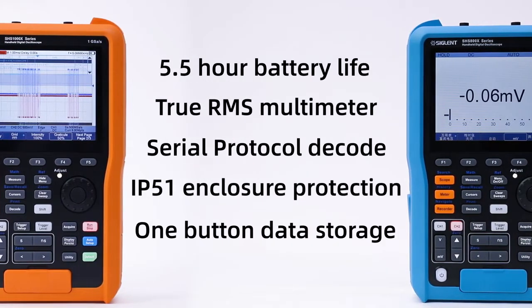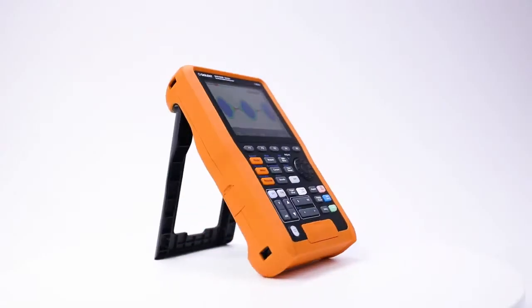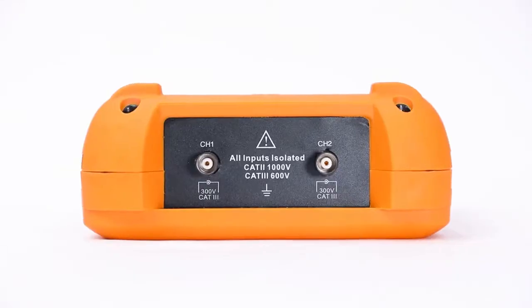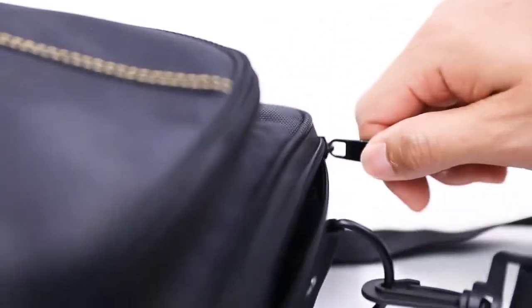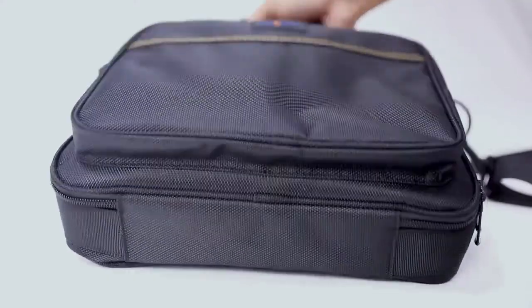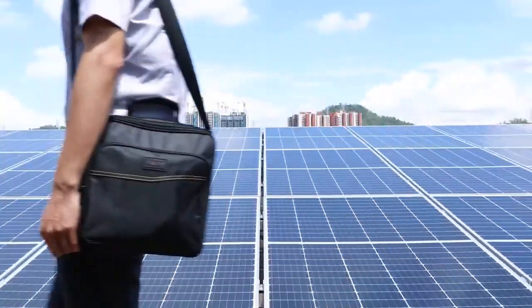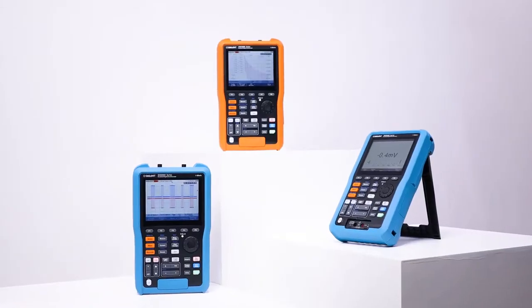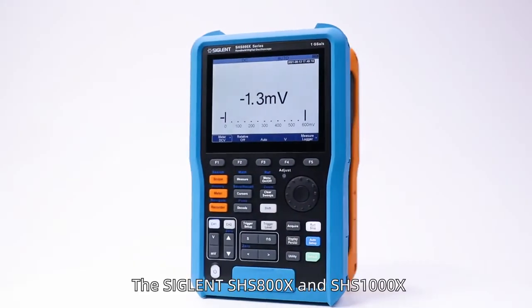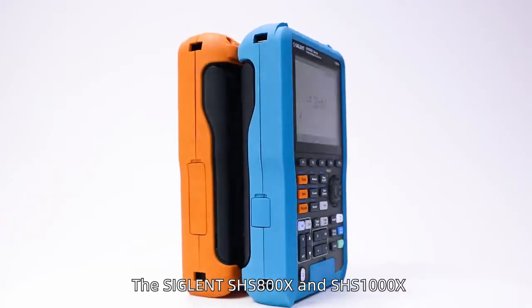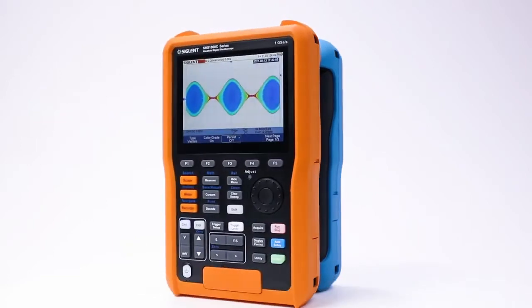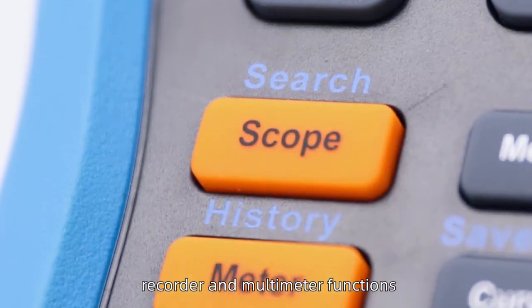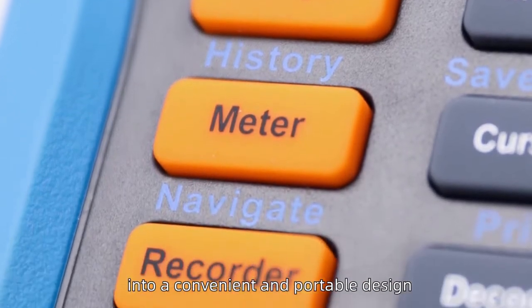Let's get started. The Siglent SHS800X and SHS1000X handheld instruments integrate oscilloscope, recorder, and multimeter functions into a convenient and portable design.